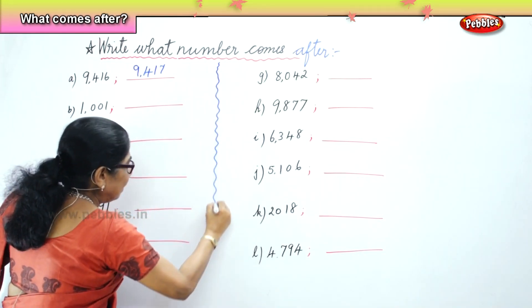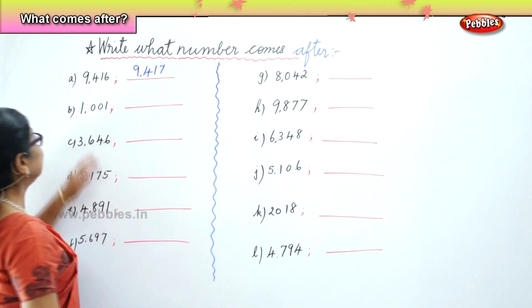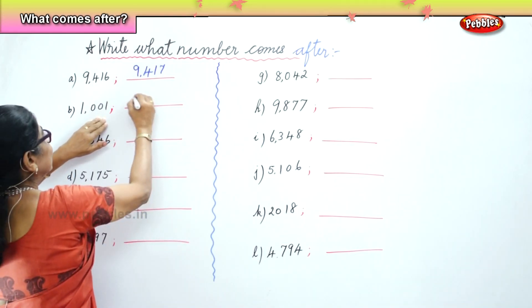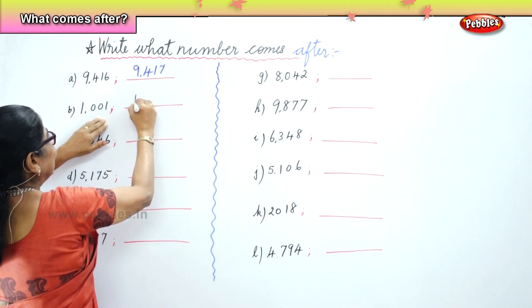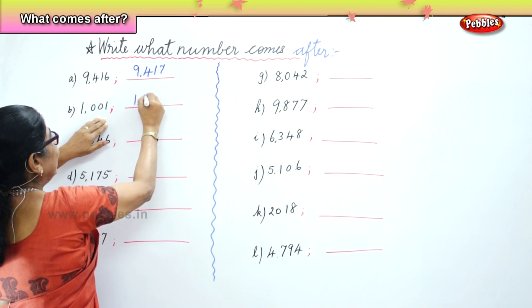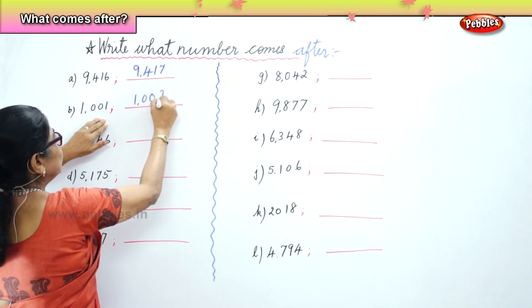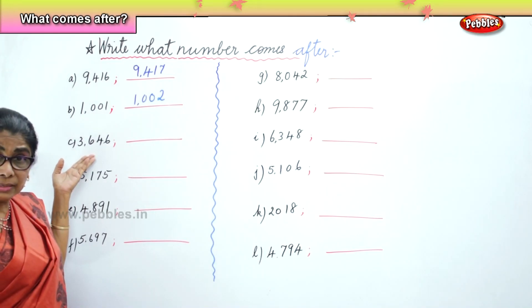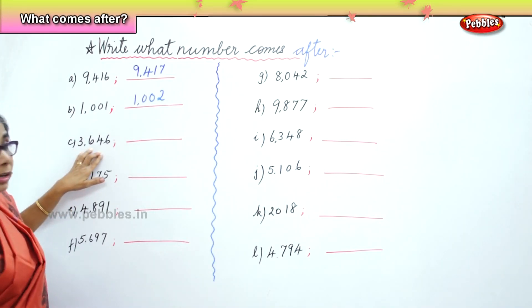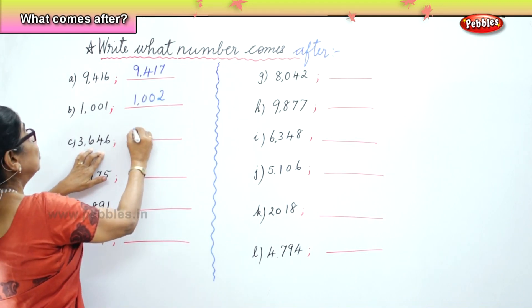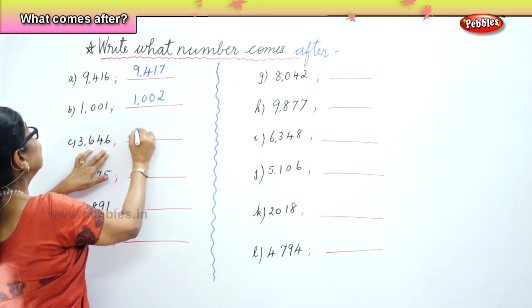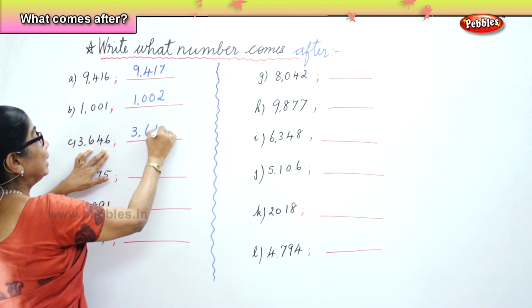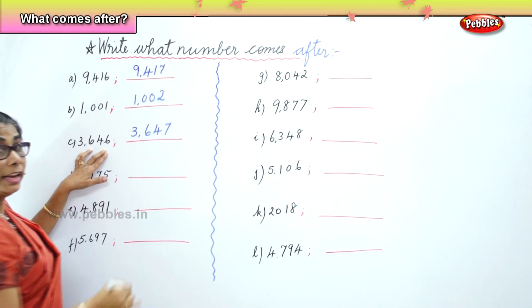The next number you have here is 1,001. Yes, good. So the next number is, the number that comes after, 1,002. Good. Next, 3,646. What number comes after that? 3,647. Very good.